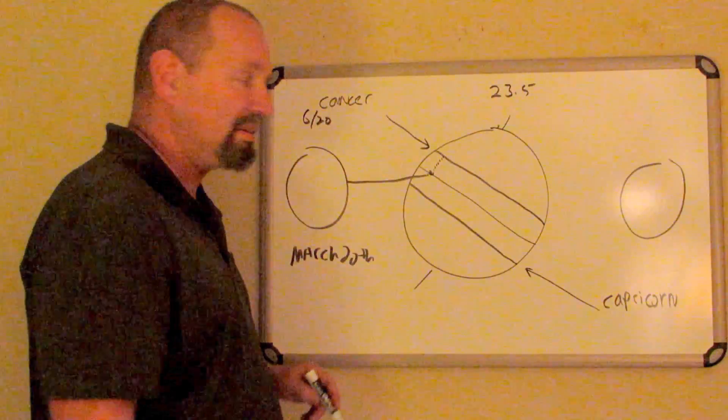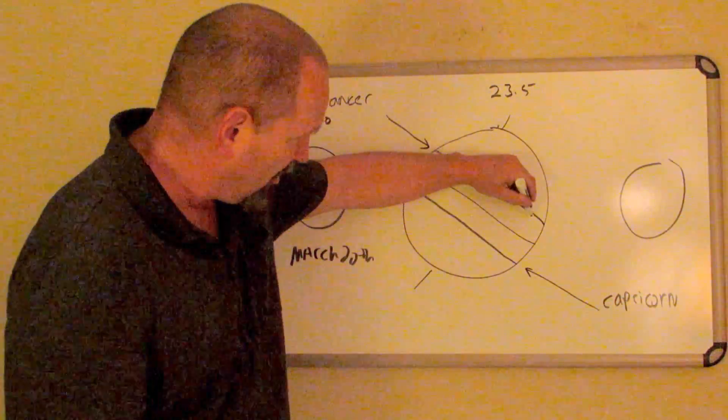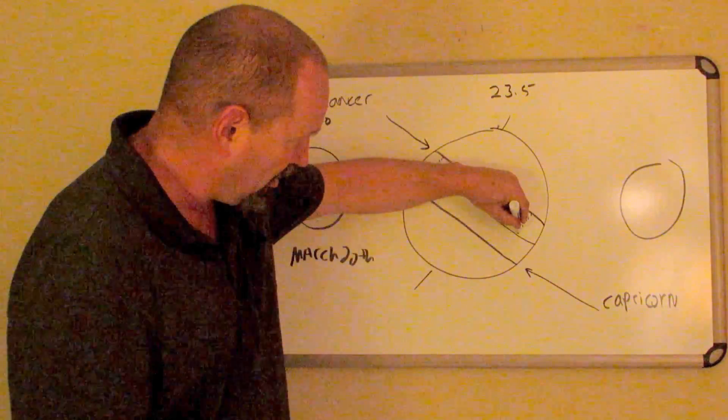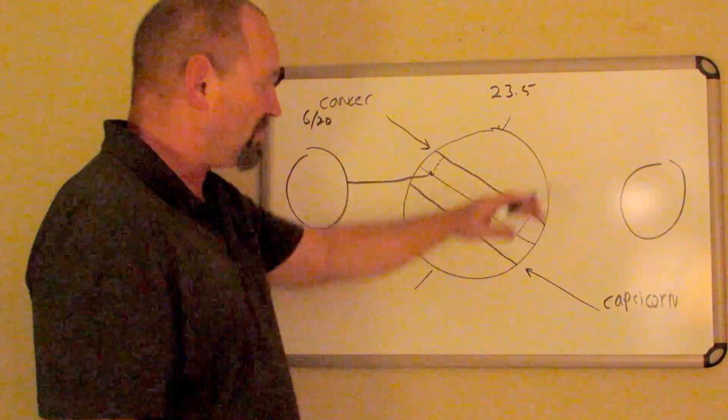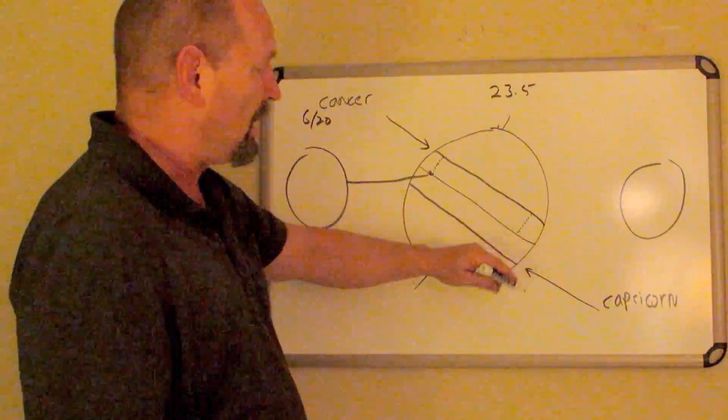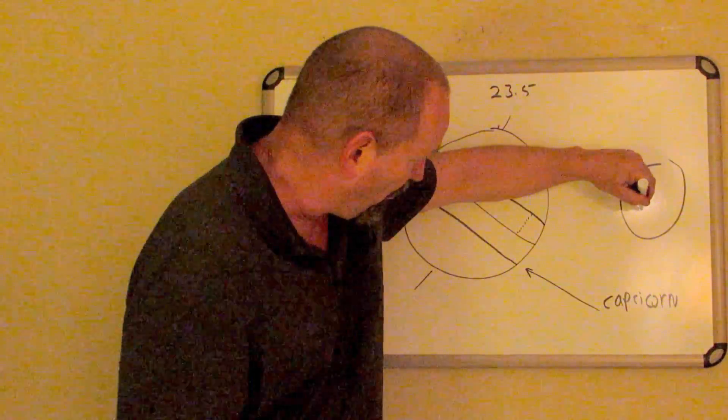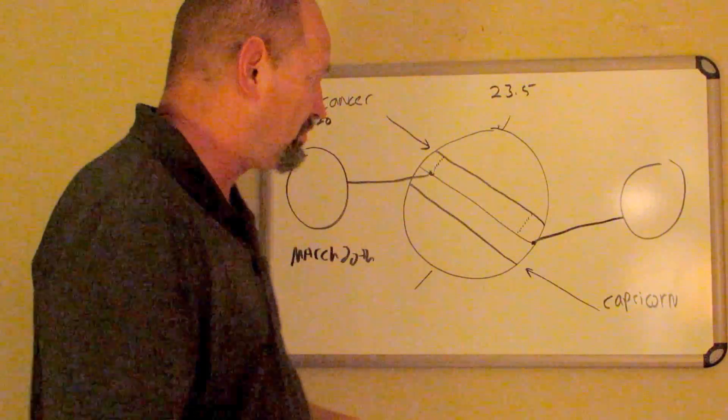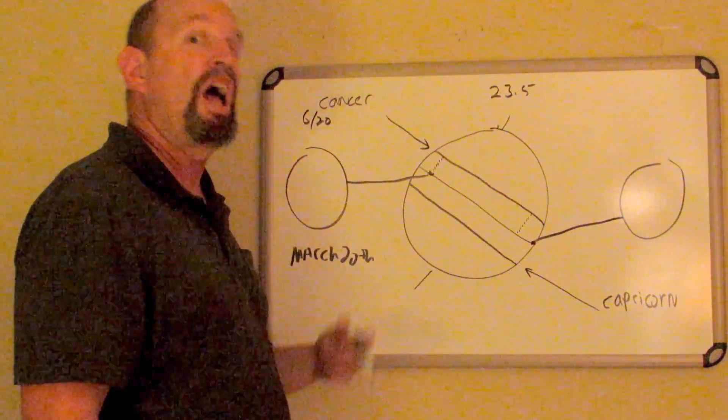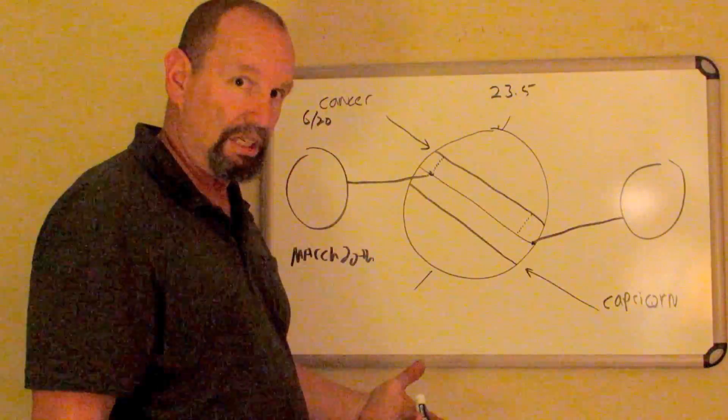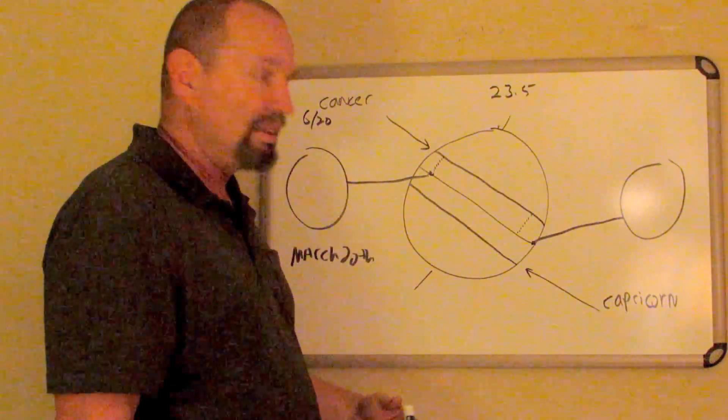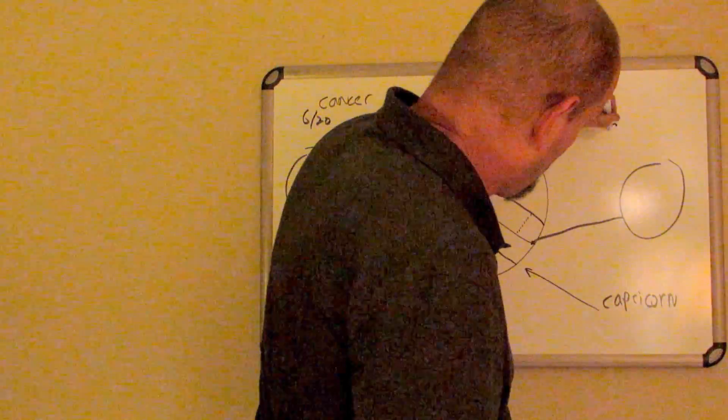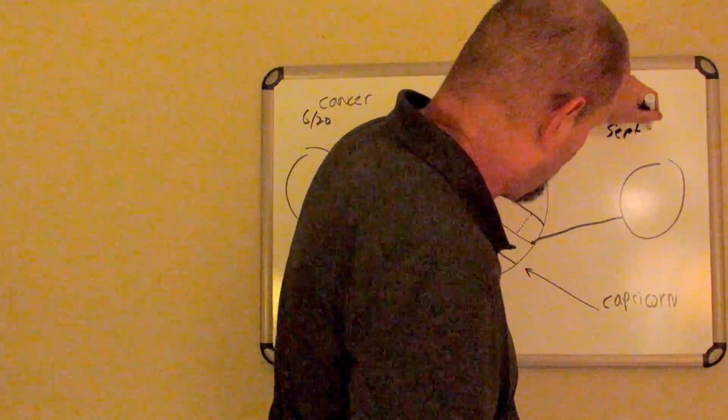After June 20th, the sun begins to move back down and it shines once again right on the equator. This is known as the fall equinox or the autumn equinox. That typically takes place right around September 22nd.